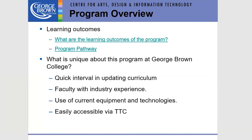T177 helps you become a programmer and has its own learning outcomes you can review. In summary, you start the program with zero knowledge and we make you a programmer — giving you what you need to become a developer. What is unique about this program at George Brown College?